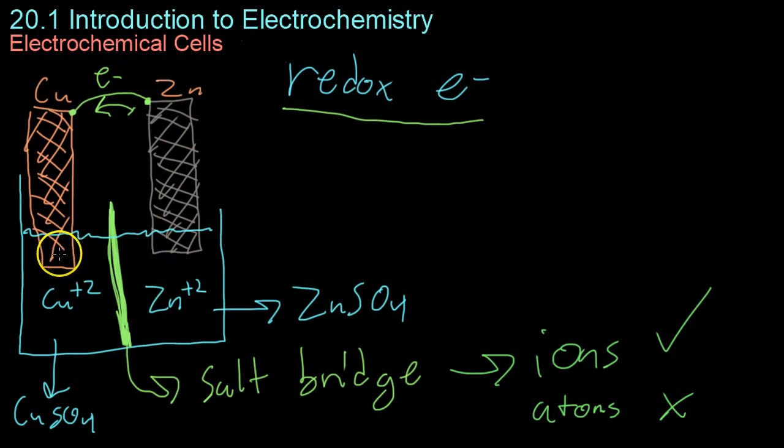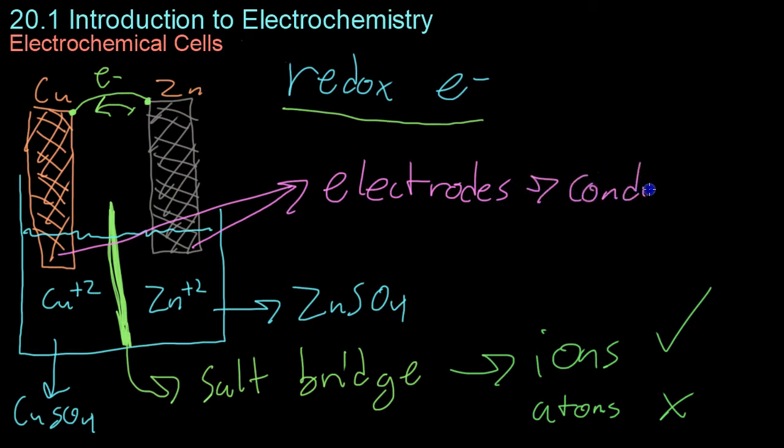Just for some terminology, this solid copper that's in solution as well as the solid zinc are what are known as electrodes. Electrodes are basically just conductors. In this case, because they're both metals they're both pretty good conductors that are in electrical contact with a nonmetallic part, in this case the solution. In other words, this is what connects the metal copper, the metal wire, and the metal zinc to the nonmetal part of the solution.